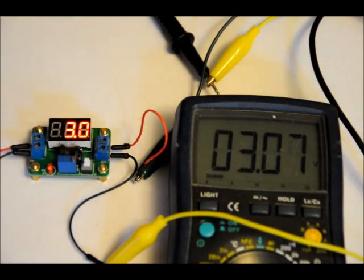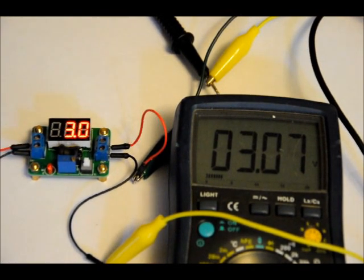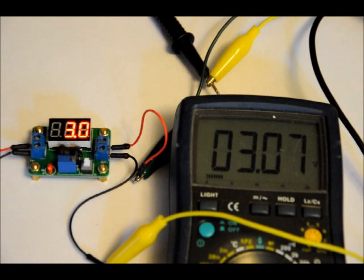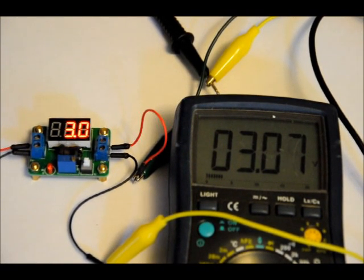You can have 0 to 24 volts at the input and the output can be tuned to 0 and 20 volts. The input voltage has to be at least 2 volts greater than the maximum output.